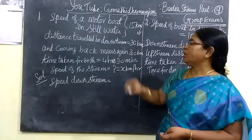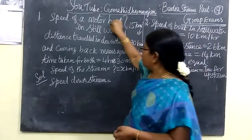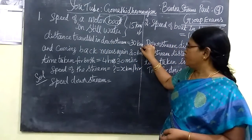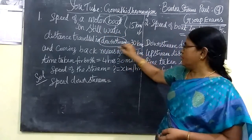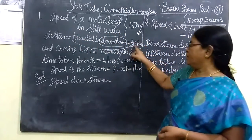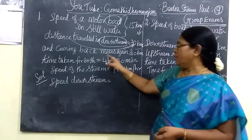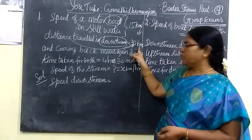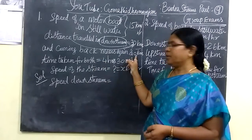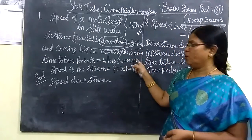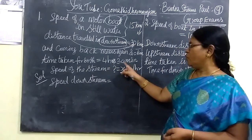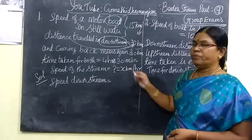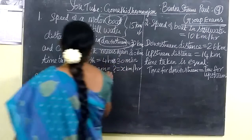Speed of your boat in still water is 15 km per hour. The distance travelled downstream is 30 km. While coming back, the same distance 30 km upstream. So it travels a total of 60 km. The time taken for both upstream and downstream is 4 and a half hours. We have to find the speed of the stream.